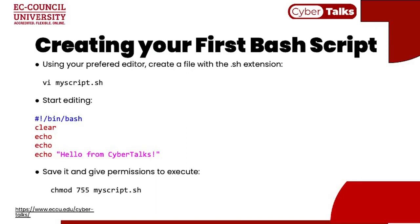Let's start creating your first Bash script. The first thing to do is start your preferred editor and create a file. It's very important that this file has the extension '.sh' because that's what Bash understands as a Bash script. For example: 'vi myscript.sh'. When you open this, you can start editing and creating your first Bash script. You'll notice a strange string at the beginning — that's what we call the shebang. A script may specify on its first line that it should always be run with Bash rather than another shell.